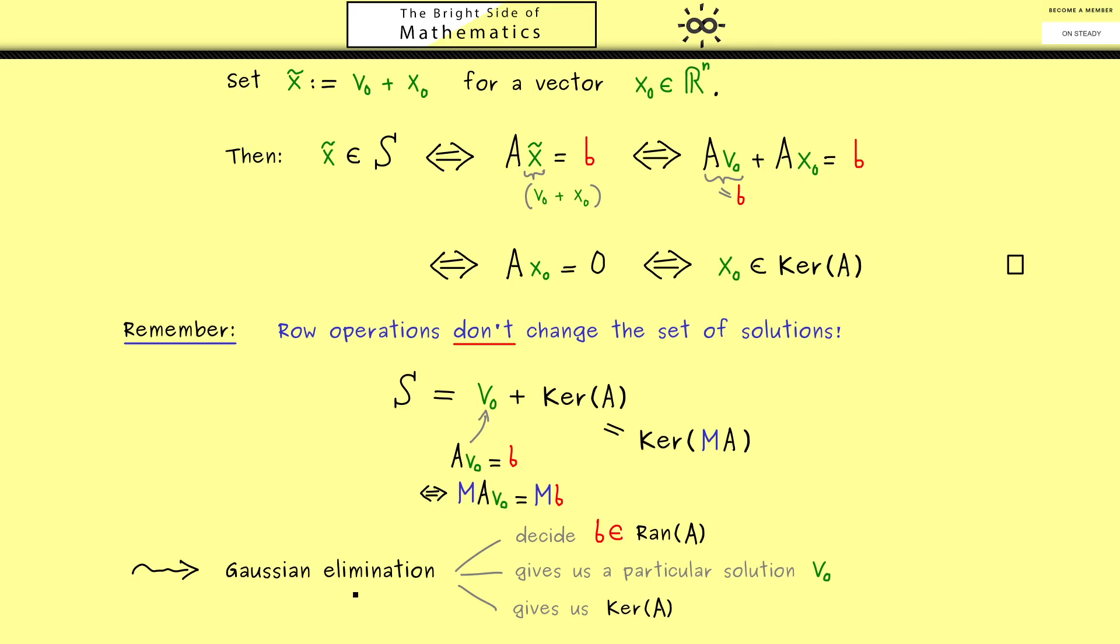And finally, the last ingredient we should get here is the kernel of A. Indeed, we will see that the Gaussian elimination will give us a basis for the kernel of A. And with this we have everything, then the system is solved, because we can write down the set S.